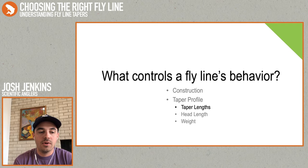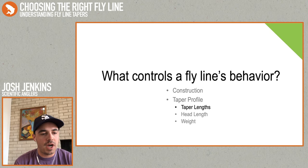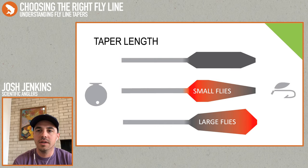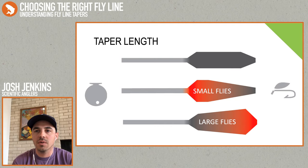The first aspect of taper profile that controls a line's behavior is the taper length. When we change the length of tapers within a profile, we're really moving around where that mass is. A standard level belly weight forward is the baseline. If I start to make that front taper longer, I'm pushing more of the mass towards the back of the line — that long, fine front taper is going to be better for delivering smaller flies more delicately. On the opposite end of the spectrum, if I make my front taper really short and taper the belly up to it, I'm pushing more mass towards the fly, which generally creates a more aggressive turnover — that pairs better with large wind-resistant or heavier flies.